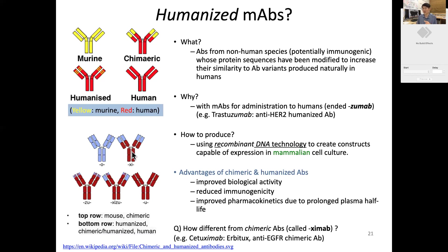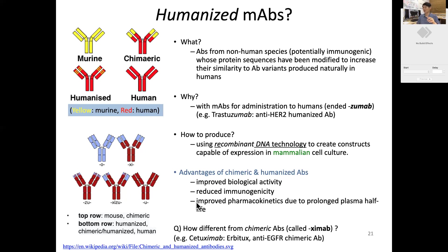In the diagram, blue represents mouse and brown represents human. The top row is a pure mouse antibody. Chimeric antibody has the Fc region replaced with human sequence. Humanized antibody has even the antigen-binding site portions replaced. The advantages of chimeric and humanized antibodies are good biological binding activity, reduced immunogenicity, and longer circulation in the body — improving pharmacokinetics because of the prolonged plasma half-life.